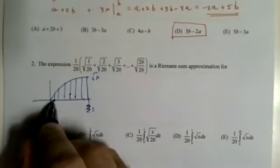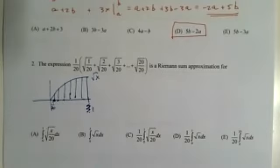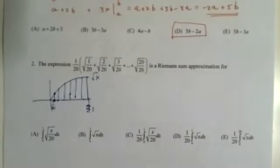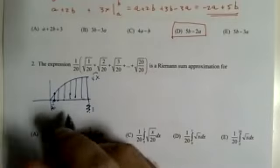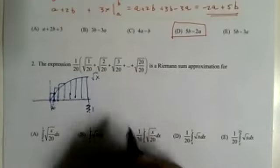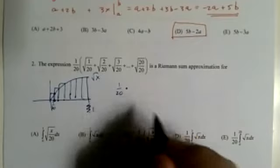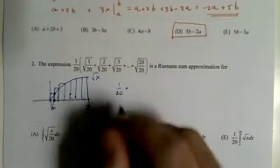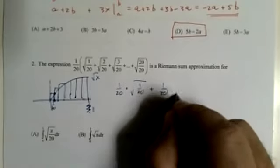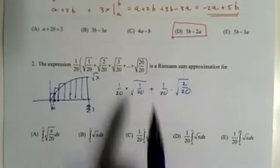That's 1 20th to there, 2 20th, 3 20th, 20 20th to 1. So, how big is this piece? Well, let's go do a right Riemann sum. Why? I have no idea. So, this rectangle, this rectangle, this rectangle. So, the base is 1 20th times the height is square root of 1 20th. What's the next one? 1 20th root of 2 20ths. That's this piece here. That makes sense.